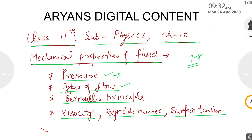Surface tension is the property of a liquid to compress itself and acquire a minimum surface area for the maximum volume. So these are the topics we have to study in chapter 10, Mechanical Properties of Fluid.